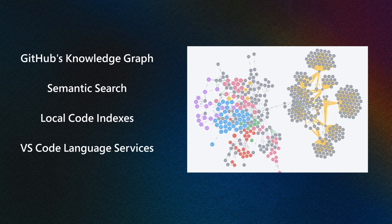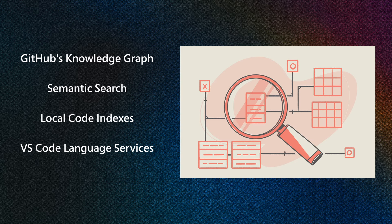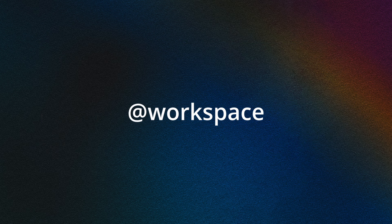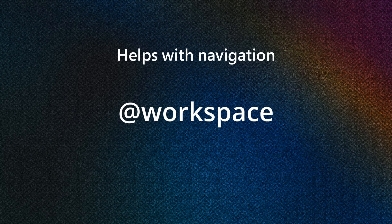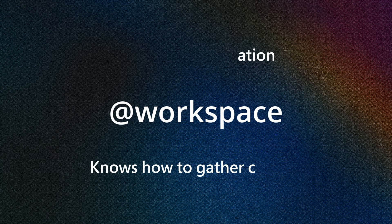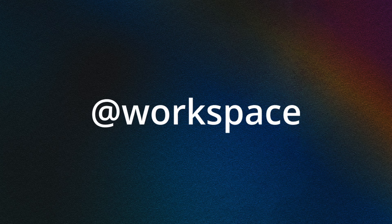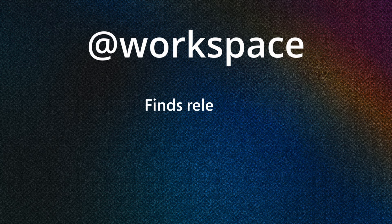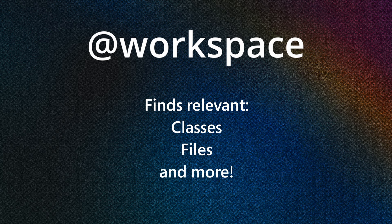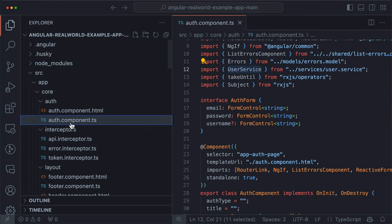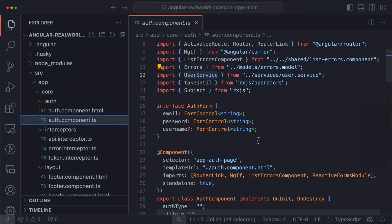In both these cases, searching for answers will focus on context related to either VS Code or the terminal, so your answer is more accurate and performance isn't wasted searching on unrelated content. But what about context related to your project files? Enter the participant @workspace. The @workspace participant knows about your workspace context and can answer questions about it. Internally the participant is powered by a few different tools: GitHub's knowledge graph combined with semantic search, local code indexes, and VS Code language services.